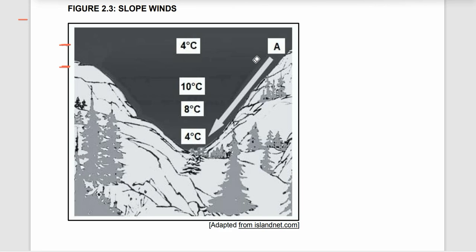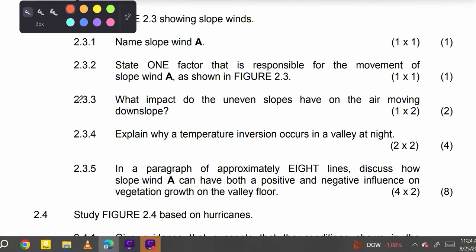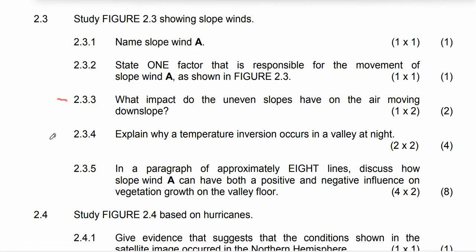To summarize: because of gravity, the cold dense air wants to move downwards — that's how you get your marks on this point. Now let's move to the next question, 2.3.3, which asks: what impact does the uneven slope have on the air moving downslope?